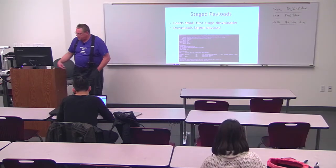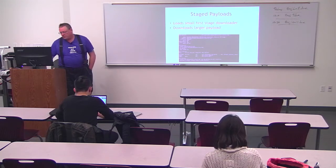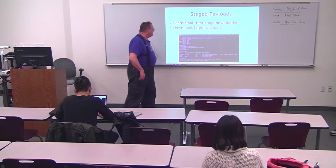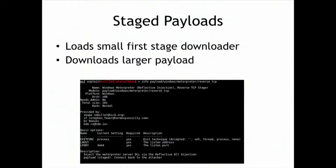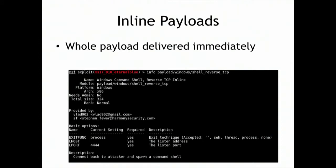So typically the first thing you'll see is a downloader, and the downloader will download more - that's what these staged payloads are. This payload, Windows Meterpreter Reverse TCP, if you get info about it, it will tell you it's a staged TCP stager. The alternative is inline payloads - these are ones that are delivered all in one chunk. An inline payload will require an exploit that lets you put in larger text. In the exploit development class, you spend a lot of time worrying about how much room you have and how to make exploits small enough to fit in the available space.